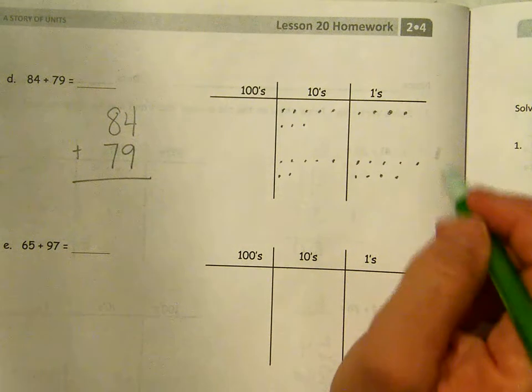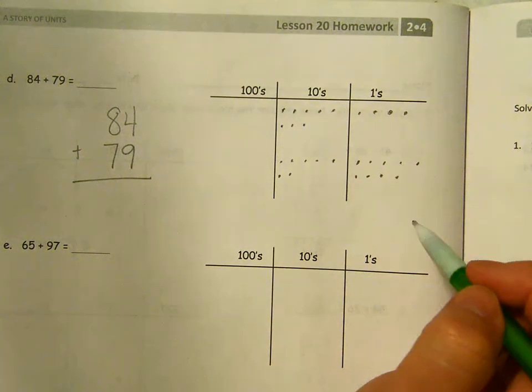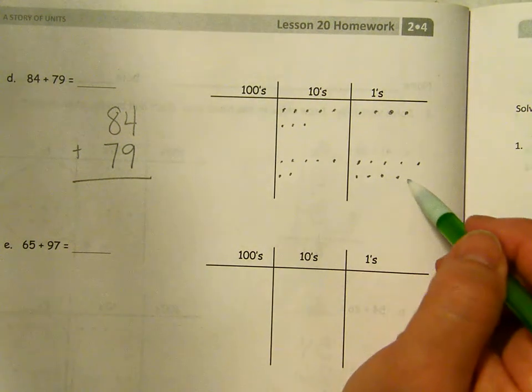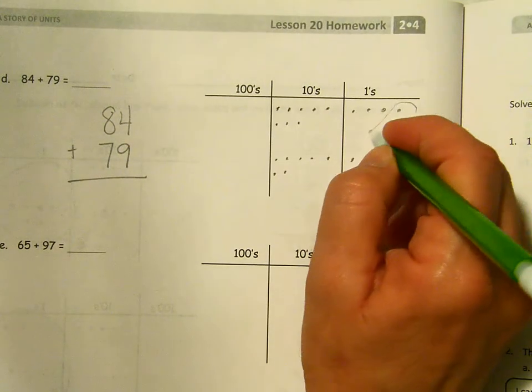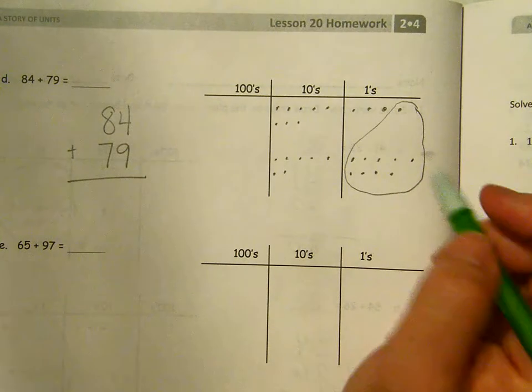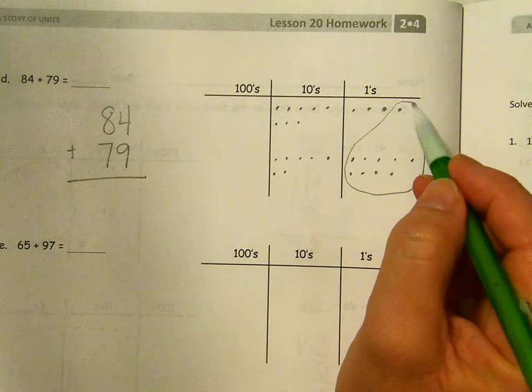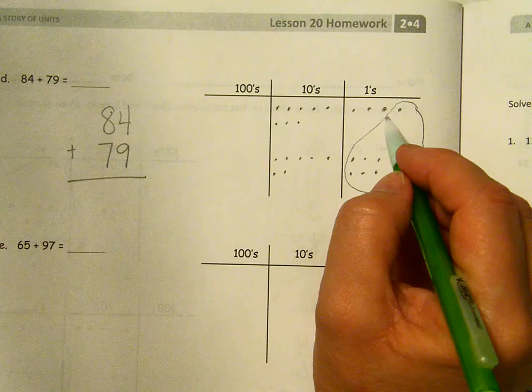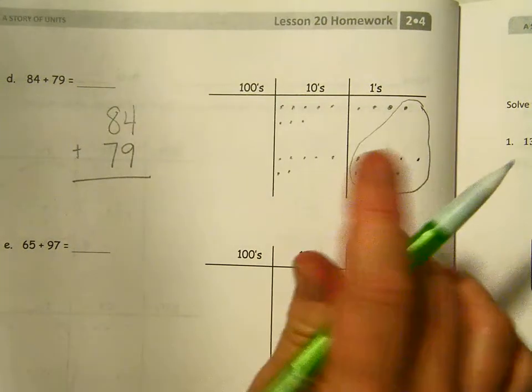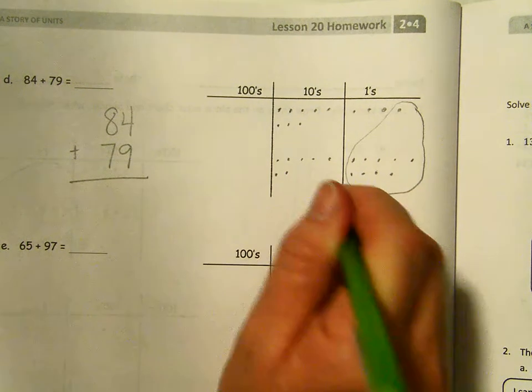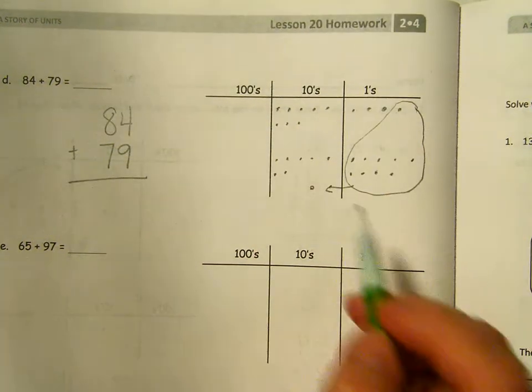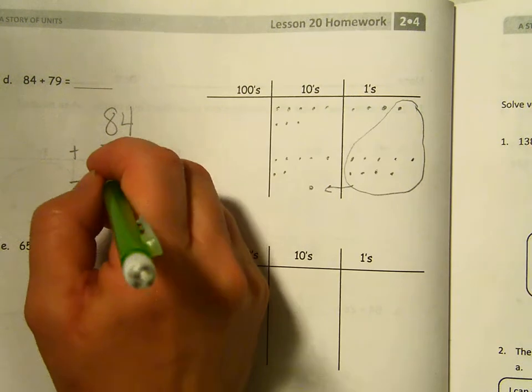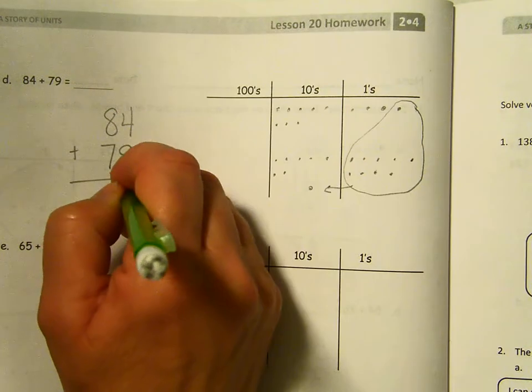Okay. It certainly seems like a lot of both ones and tens. I think we're going to have to do some composing here. Four plus nine. Again, nine only needs one more to make a group of 10. So here I have nine, 10. Four plus nine is 10, three or 13. So when I bundle up that 10, I need to remember to bring it over and make a new 10 down here. So when I write that here, I say four plus nine is 13. That's one group of 10 and three extra.